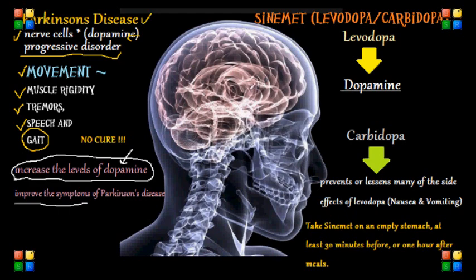One of the most common drugs we use to treat our patient with Parkinson's is Sinemet. Sinemet is basically made up of two drugs, which are levodopa and carbidopa. That is why Sinemet is sometimes called levodopa-carbidopa.